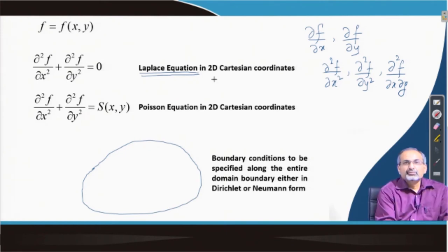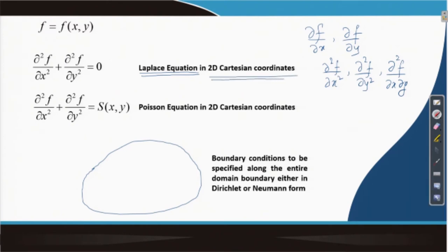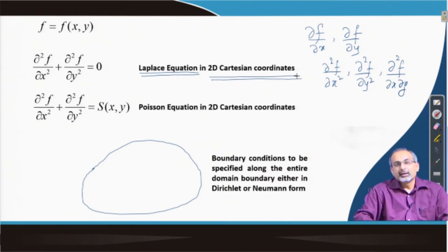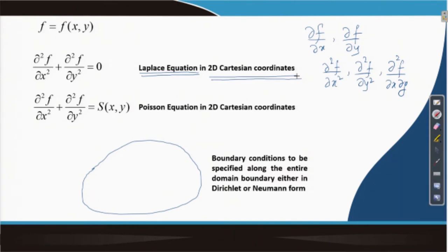We are going to talk about a very important equation — the Laplace equation — which is the primary example when we talk about elliptic partial differential equations. In this PDE, second order derivatives of f are involved, and they are either with respect to x or with respect to y, but they are not mixed derivatives. We are looking at the governing Laplace equation in two dimensions and in Cartesian space.